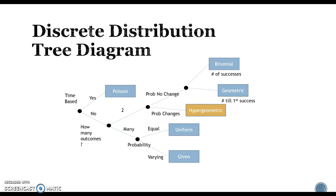So the first one is hypergeometric, so not time-based, two choices, and the probability changes. So it's kind of like binomial, but the probability did not change for binomial, and here it does.